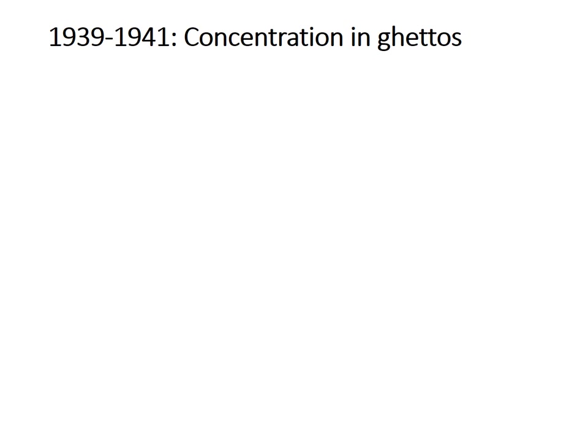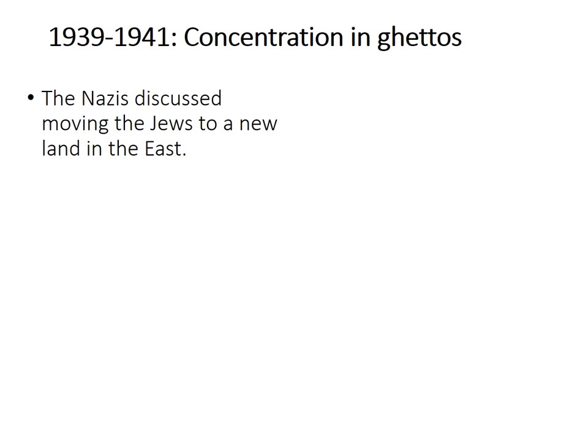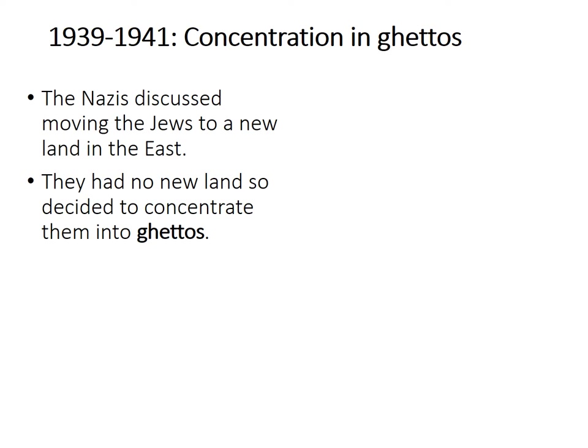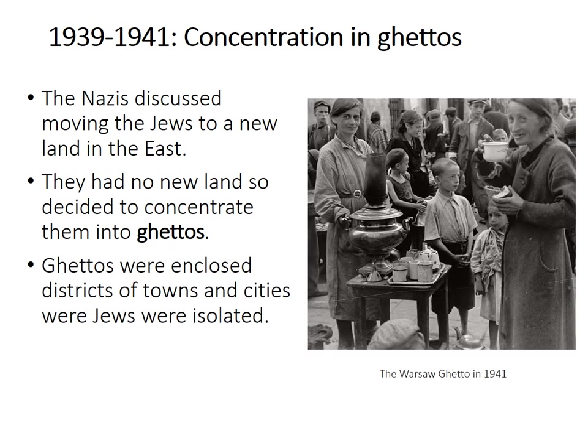From 1939 to 1941, persecution changes from being about emigration to being about ghettoisation. Immediately, as the Nazis occupied Poland, they discussed moving the Jews to a completely new land in the east — moving the 3.5 million Jews out of Poland into a new country. The problem was they had no new country to send those Jews to. So as a short-term solution, they decided to concentrate Jews into ghettos. Ghettos are enclosed districts of towns and cities where Jews were isolated. Here is a picture of the Warsaw Ghetto in 1941.